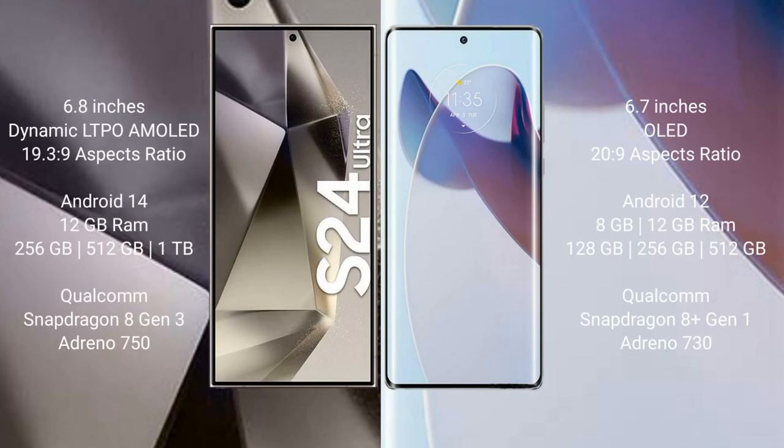Samsung Galaxy S24 Ultra comes with a 6.8-inch Dynamic LTPO AMOLED display and aspect ratio 19.3:9. Motorola Moto X30 Pro has a 6.7-inch OLED display and aspect ratio 20:9. Samsung Galaxy S24 Ultra runs on Android 14. Motorola Moto X30 Pro runs on Android 12.